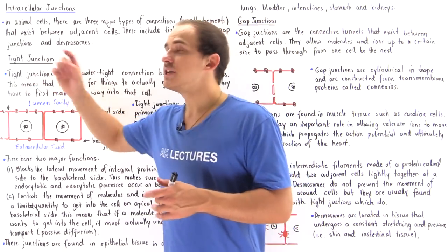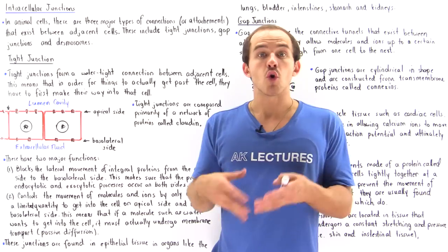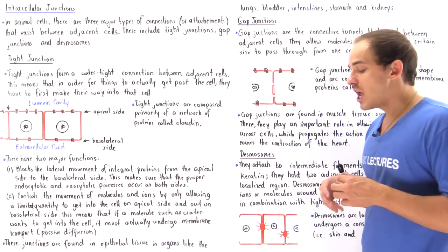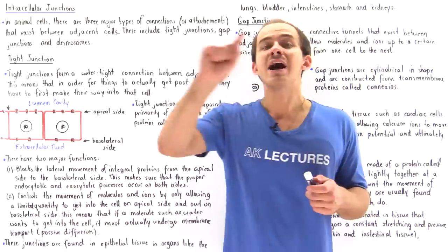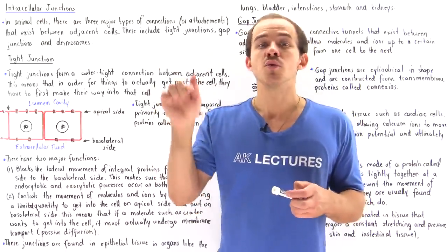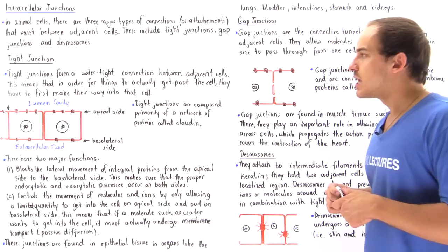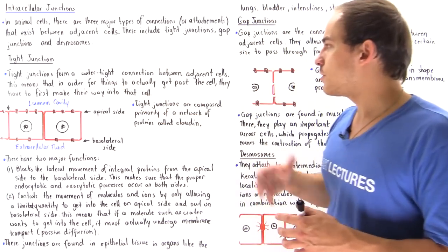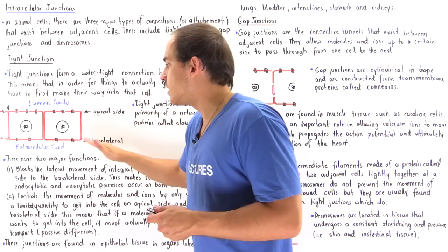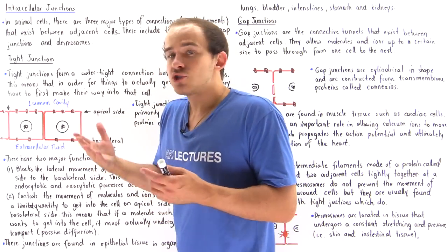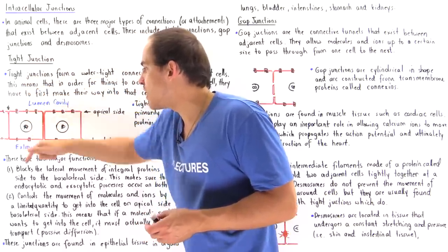Tight junctions basically form watertight seals or watertight connections between adjacent cells. This means molecules and ions cannot get around cells — they must actually pass through the cell to get from one side, the lumen side, to the other side, the extracellular fluid side. So water must pass through the cell membrane on the lumen side and through the cell membrane on the extracellular side.